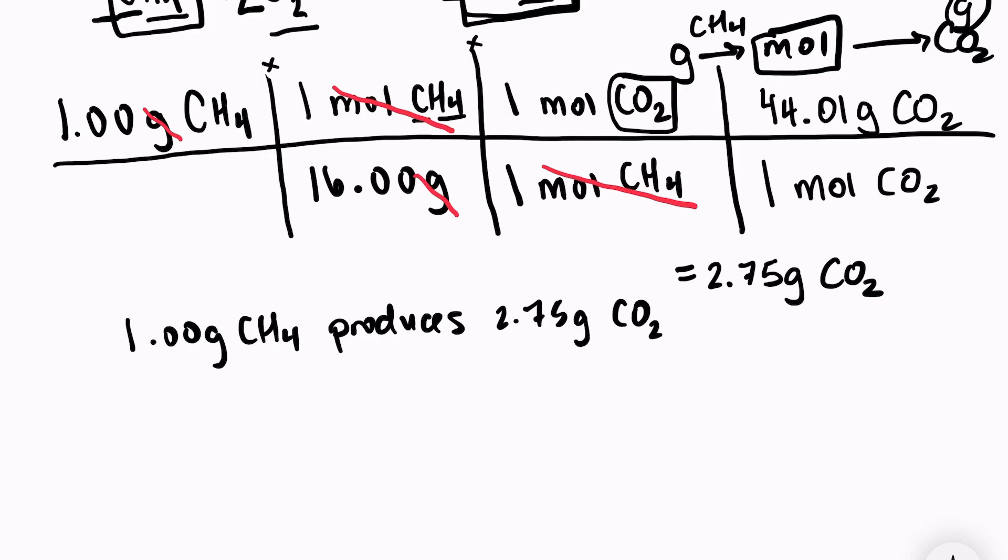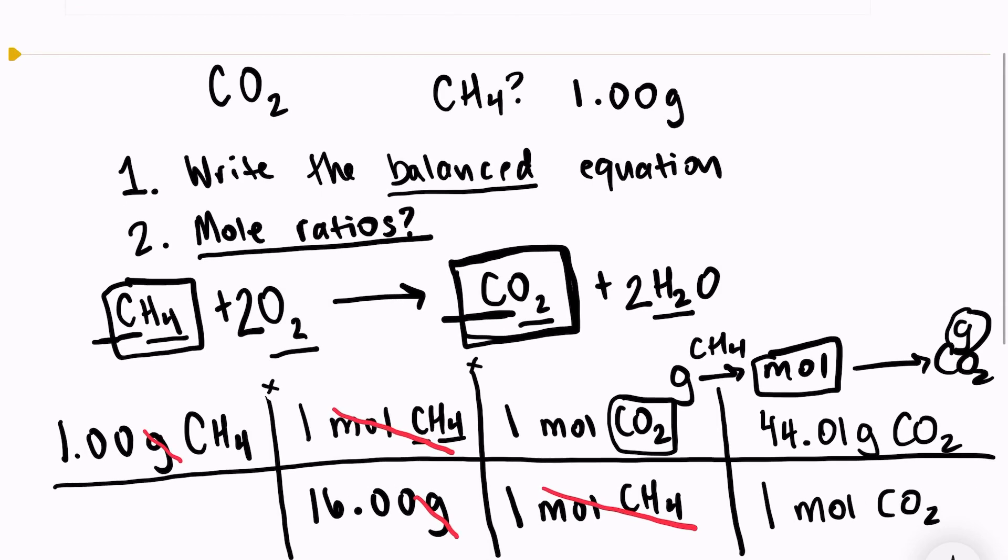And I solved that again by writing out my balanced equation and then deciding which mole ratio that I had to use. This is essentially just a larger conversion problem. We're still converting from grams into moles, but not only am I converting from grams into moles, I'm converting from moles of CH4 into moles of CO2.